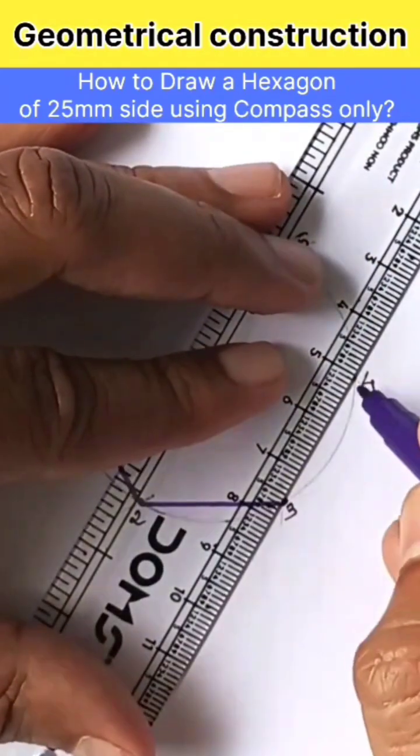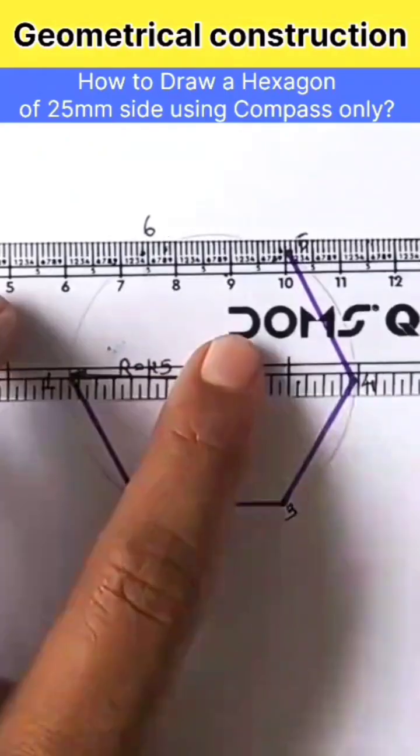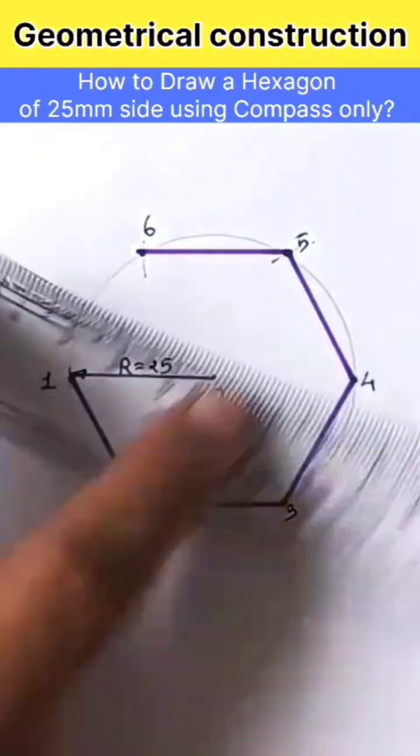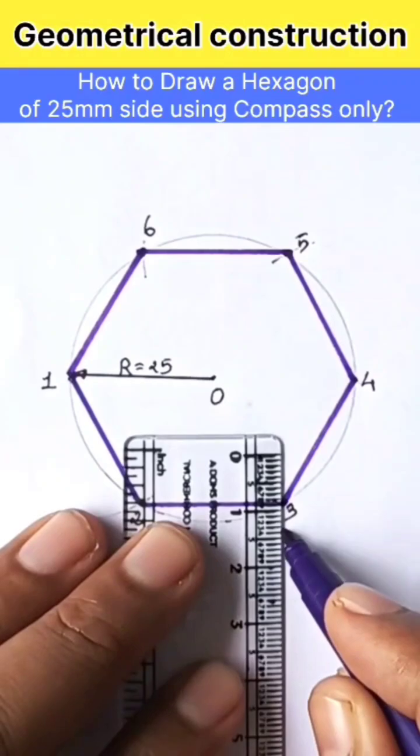The required hexagon of 25 mm side is ready. And that's how you can easily draw a perfect hexagon of any size very quickly using compass only.